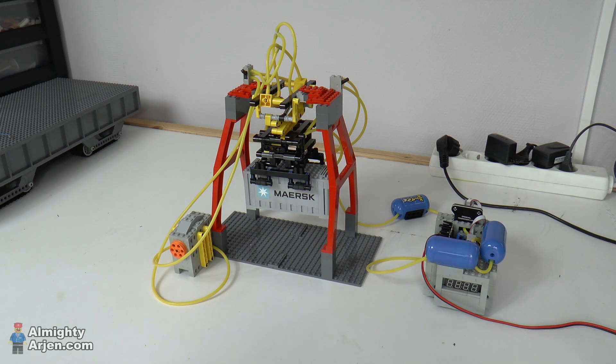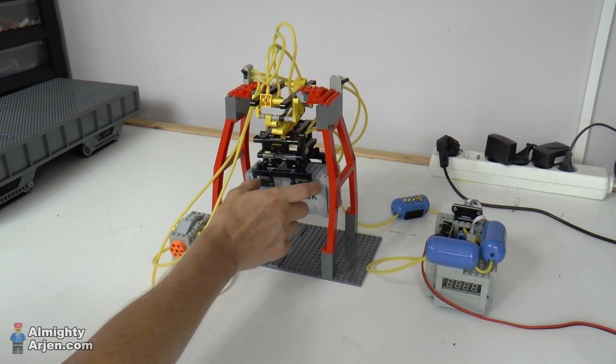This system is a bit different than normal. A normal gantry crane uses strings to move a container up and down and I thought I can use strings but it's a bit boring maybe and I want to try something else. So that's why I developed this scissor lift system with which I can pull up the containers. The main downside of this system is that it is a bit wobbly as you can see.